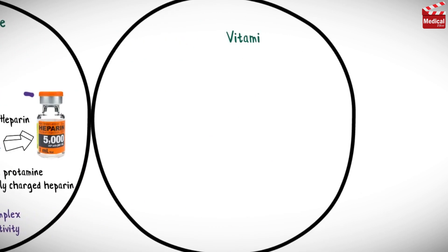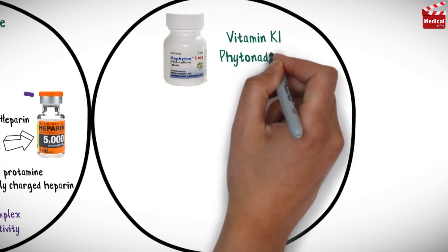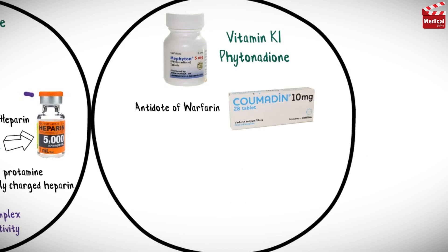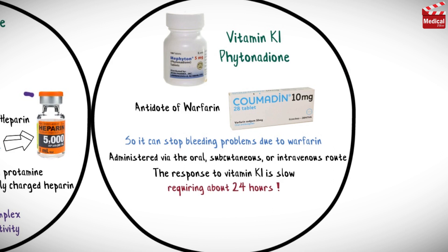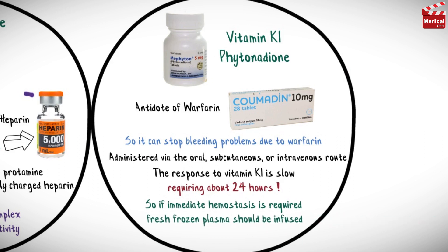The last agent is vitamin K. Vitamin K1, known as phytonadione, is the antidote of warfarin, so it can stop bleeding problems due to warfarin. Vitamin K1 may be administered via the oral, subcutaneous, or intravenous route. The response to vitamin K1 is slow, requiring about 24 hours. So if immediate hemostasis is required, fresh frozen plasma should be infused.